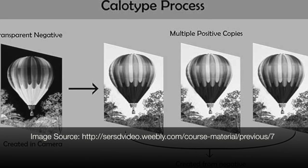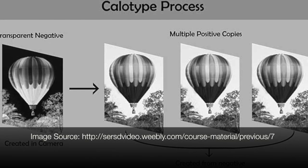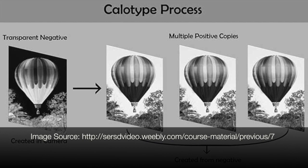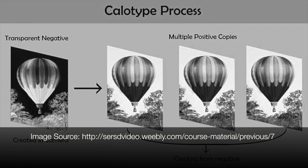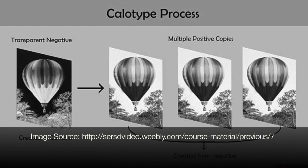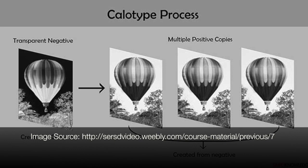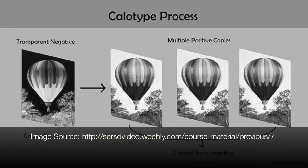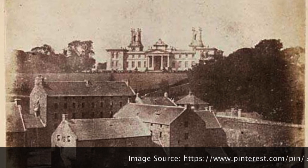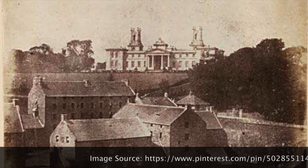The calotype process was first introduced by Henry Fox Talbot in 1841. This process involved taking an image on a camera, better known as a negative, and transforming it into a full-size image after the plates are removed from the camera. This process allowed for the shortest amount of exposure time than any other previous technologies. It took photographers around one to three minutes to capture a photo.